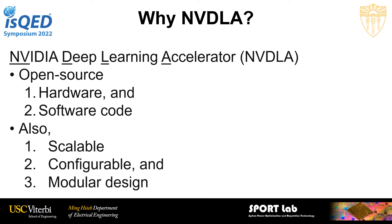Why have we chosen the NVIDIA Deep Learning Accelerator (NVDLA)? The most important feature is that NVDLA is open source — both the hardware and software code — which was really important when choosing it. Additionally, it is scalable, configurable, and its architecture is designed in a modular way. All three of these parameters make it an attractive choice.